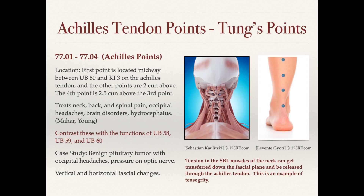Point 77.01 is located directly in the tendon between UB60 and Kidney 3. Point 77.02 is two sun above that, the third point is two sun above that, and the fourth point is two and a half sun above the third. We needle right into the tendon. If you haven't done this before it seems strange — I was initially concerned about it — but after needling these points on many clients over close to 16 years, I've never had an adverse reaction. Many people don't feel these points very strongly; I've needled them on children with no issue.